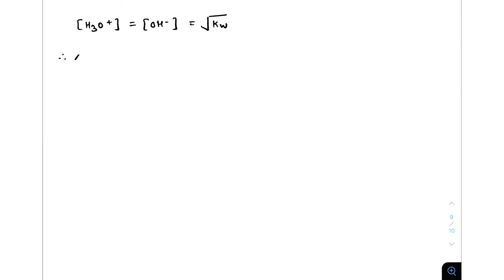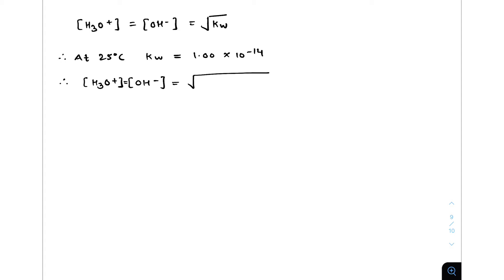At 25°C, we know Kw = 1.00 × 10⁻¹⁴. Therefore, [H₃O⁺] = [OH⁻] = √(1.00 × 10⁻¹⁴) = 1.00 × 10⁻⁷ mol/L. So the concentration of both hydronium and hydroxide ions at 25°C is 1.00 × 10⁻⁷ molar.